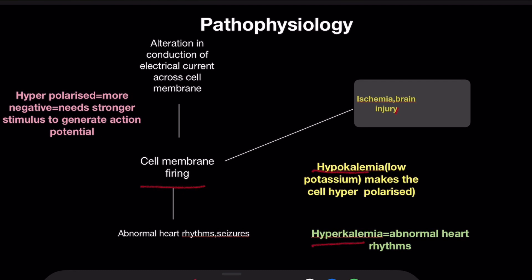Hypokalemia and hyperkalemia are both electrolyte imbalances that cause abnormal cell membrane firing. Hypokalemia means low potassium level. Low potassium level means positive charges decrease, and as a result, negative charges increase — that is, the cells become hyperpolarized. These hyperpolarized cells need a stronger stimulus to depolarize the cell membrane and thereby generate an action potential.